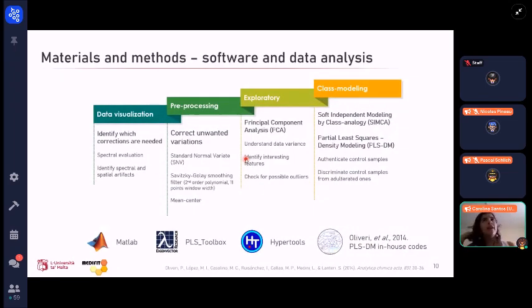To evaluate this massive amount of data, we first did data visualization to identify which types of correction our data needed, then pre-processing using standard normal variate and Savitzky-Golay to correct some additive effects and noise effects, especially because we're talking about reflectance data. Then we used principal component analysis to understand data variance and identify interesting features at this exploratory point.